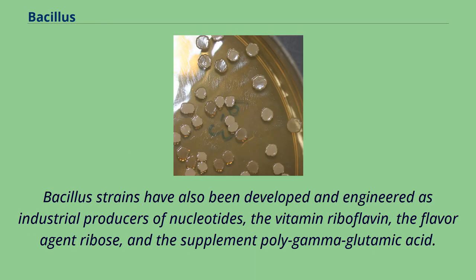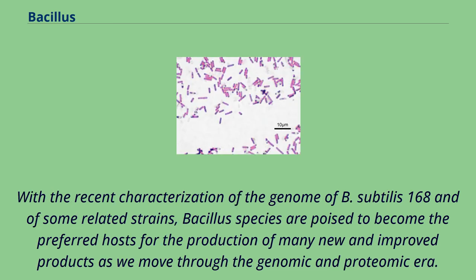Such developments from our understanding of the complex protein translocation machinery of gram-positive bacteria should allow the resolution of current secretion challenges and make Bacillus species preeminent hosts for heterologous protein production. Bacillus strains have also been developed and engineered as industrial producers of nucleotides, the vitamin riboflavin, the flavor agent ribose, and the supplement poly-gamma-glutamic acid. With the recent characterization of the genome of B. subtilis 168 and of some related strains, Bacillus species are poised to become the preferred hosts for the production of many new and improved products.